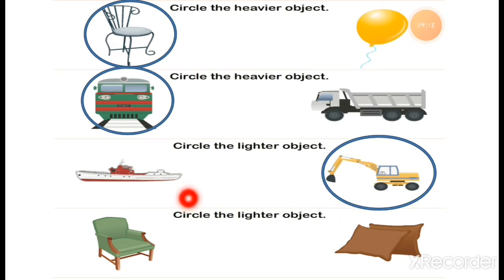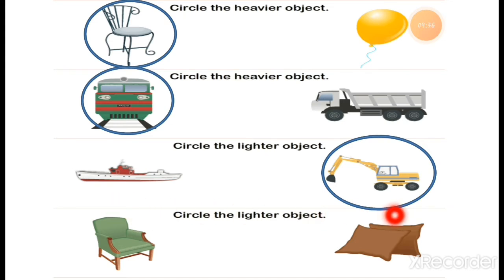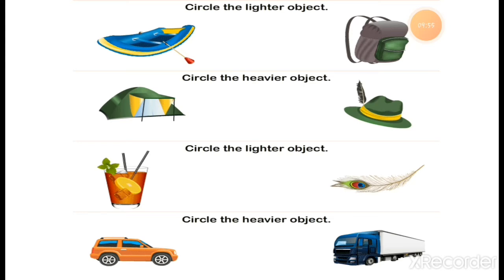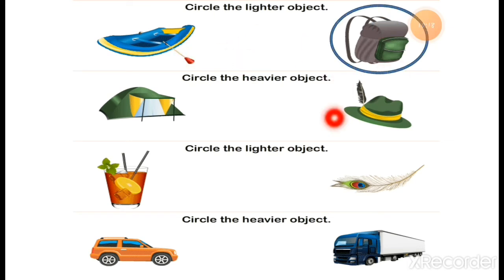The next heading: circle the lighter object. Here is a sofa chair and here is a cushion. Of course you can easily identify whose weight is less. One is a big chair and one is a cushion, so my answer is the cushion. Next: circle the lighter object. Here is a boat and here is a bag. You have to compare the weight — my answer is the bag, which is lighter than the boat.